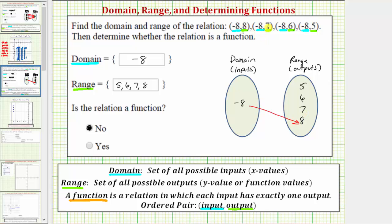The next ordered pair is negative eight comma seven. When the input is negative eight the output is seven, so we draw an arrow from negative eight in the domain to seven in the range. The next ordered pair is negative eight comma six, so draw an arrow from negative eight to six. And then the last ordered pair is negative eight comma five, so we draw an arrow from negative eight to positive five.